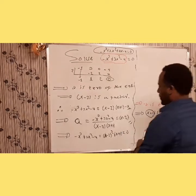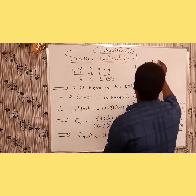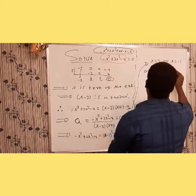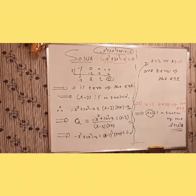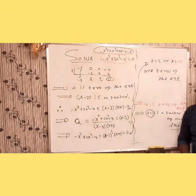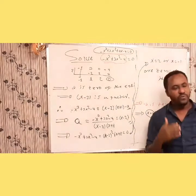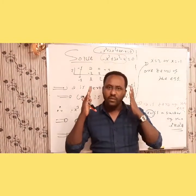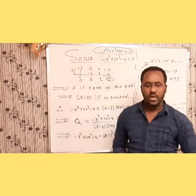Finally, from the factored form (x - 2)² (x + 1) = 0, the zeros are x = 2 and x = -1. These are the zeros of the given equation. Based on this synthetic division method, you can find the zeros of any polynomial equation in general — you can find the rational zeros of any polynomial using synthetic division.